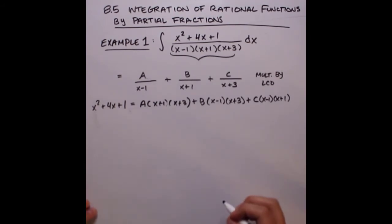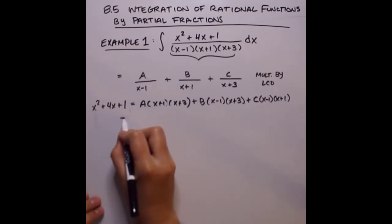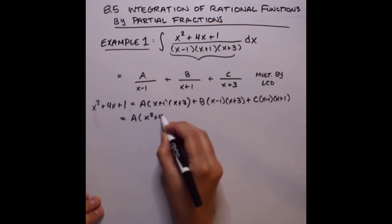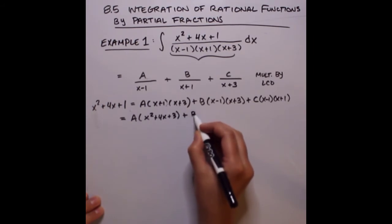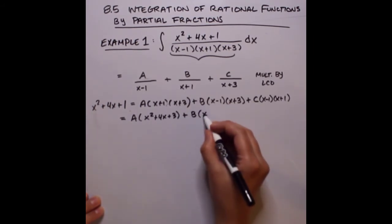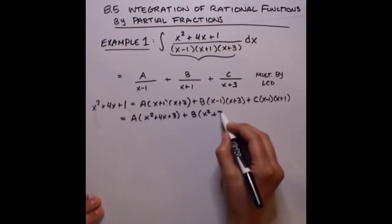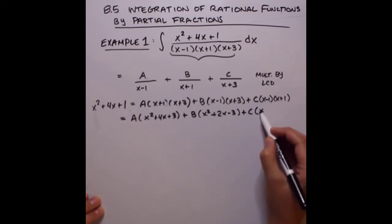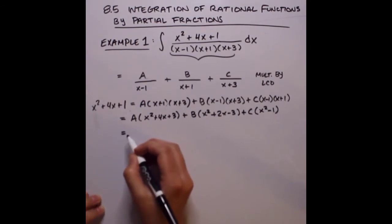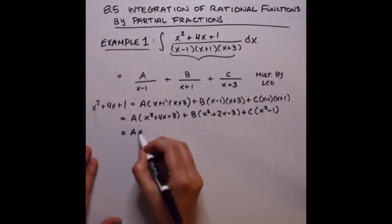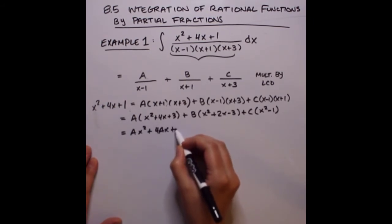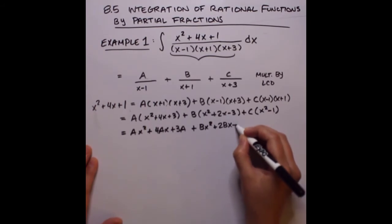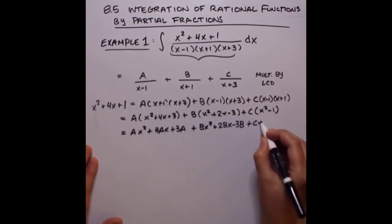From here, let's start simplifying — a whole lot of algebra is needed. Foiling out each product: A times (x squared plus 4x plus 3), plus B times (x squared plus 2x minus 3), plus C times (x squared minus 1). Distributing A, B, and C gives: Ax squared plus 4Ax plus 3A, plus Bx squared plus 2Bx minus 3B, plus Cx squared minus C.